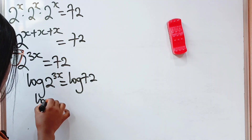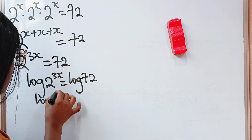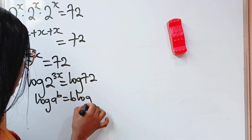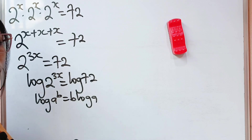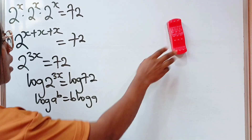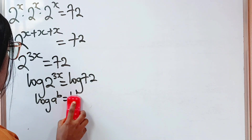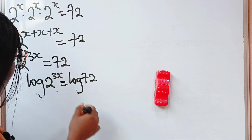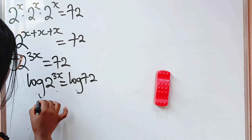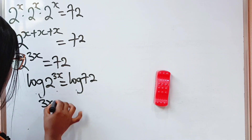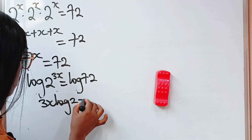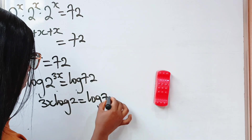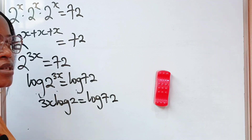Now, when you have log a raised to the power of b, this is equal to b multiplied by log a. That means that we can write this as 3x multiplied by log 2 is equal to log 72.